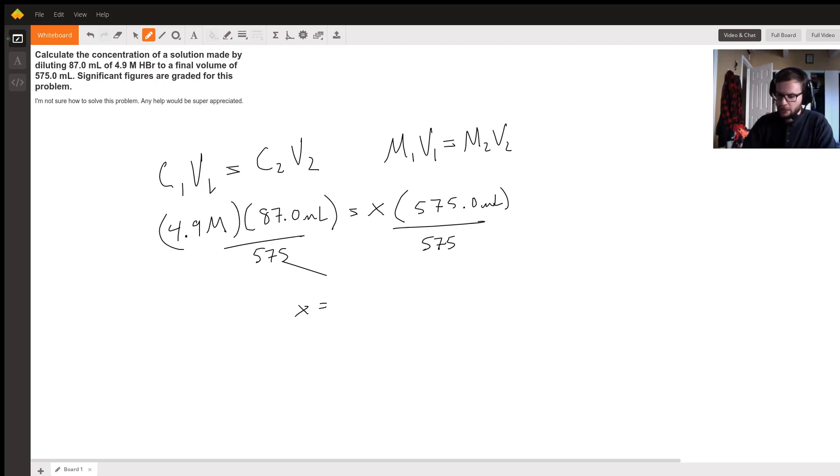And we'll get 0.47139. So we'll get 0.74139, and this would be molarity. So it's our concentration. Units of milliliters cancel out and we're left with molarity as our units.